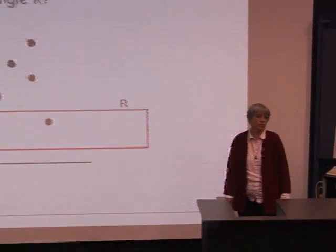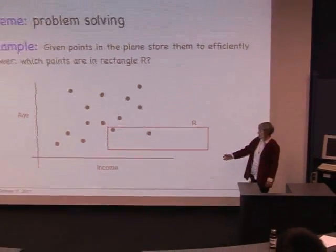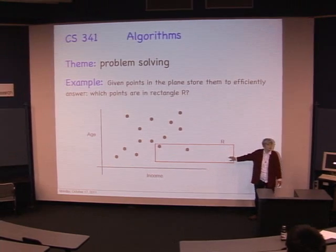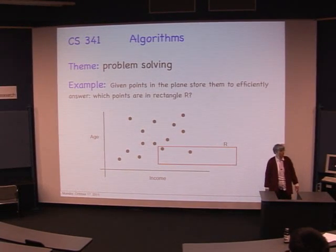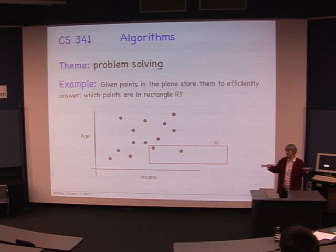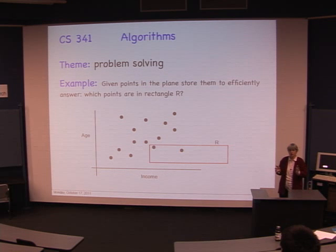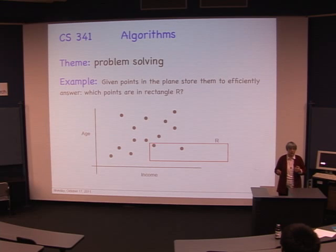Here's a little example problem. Suppose you have a set of people, you know how old they are and what their income is, and you want to know who are the millionaires between 20 and 30 years old. So you're asking for all the dots within some rectangle — that's the kind of thing we study in CS 341. Now if you had that only in one dimension, say only ages, you probably already know how to do this using sorting and binary search.